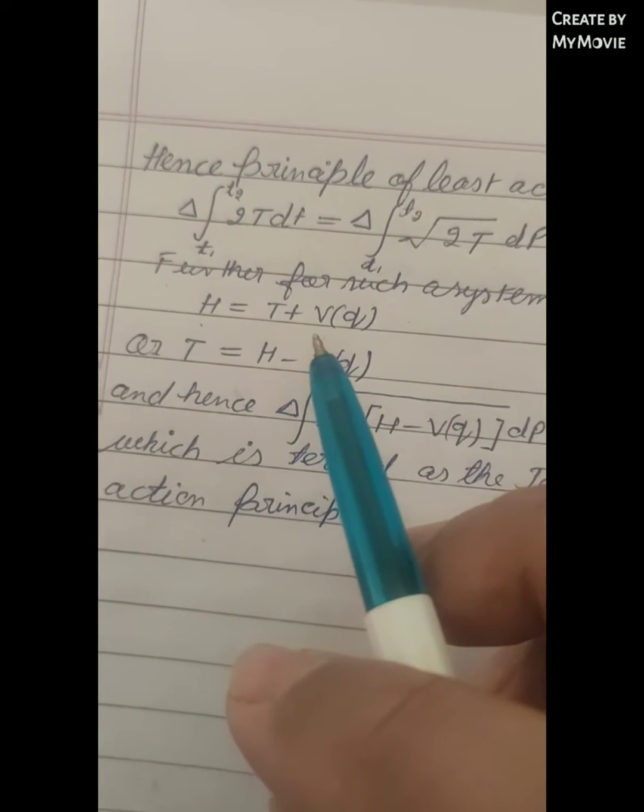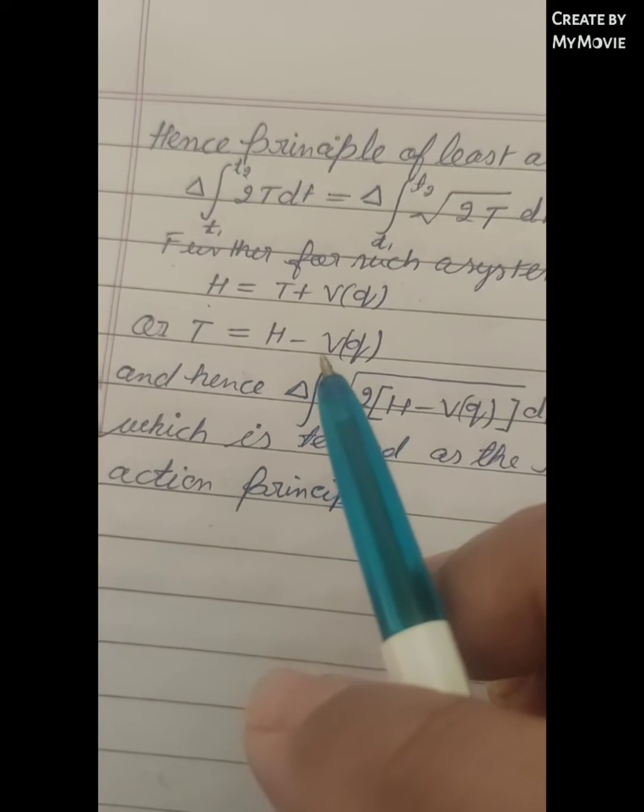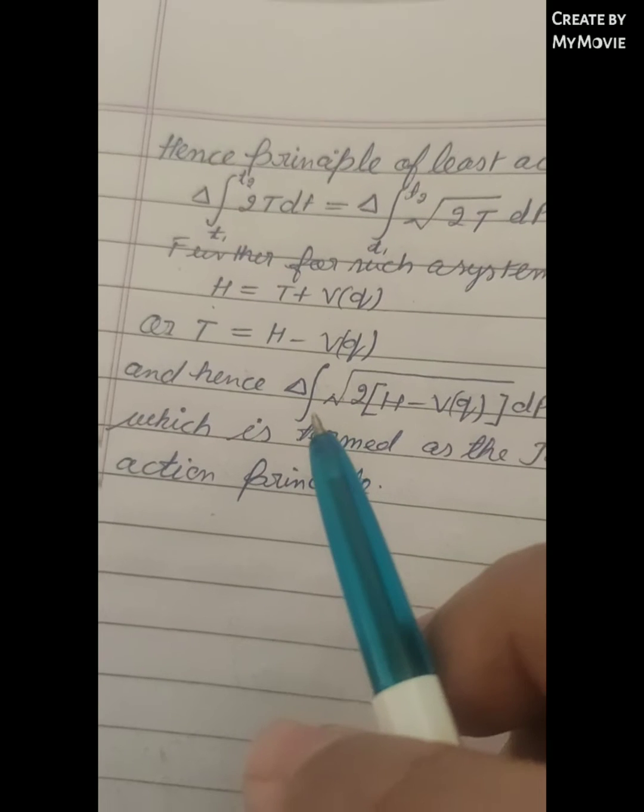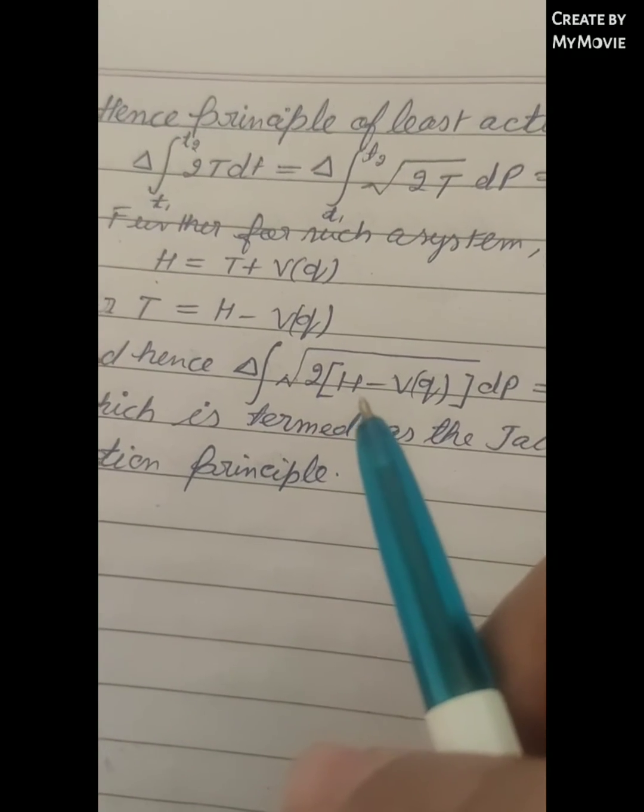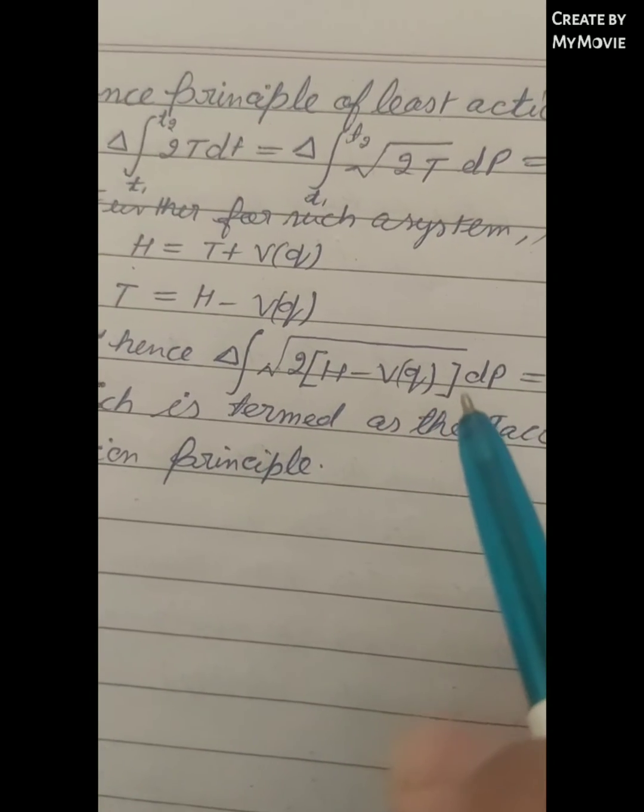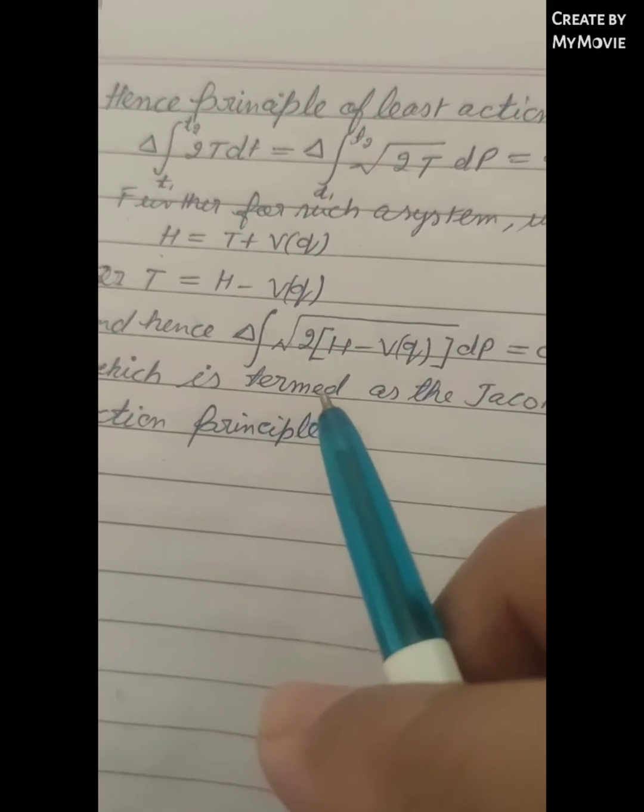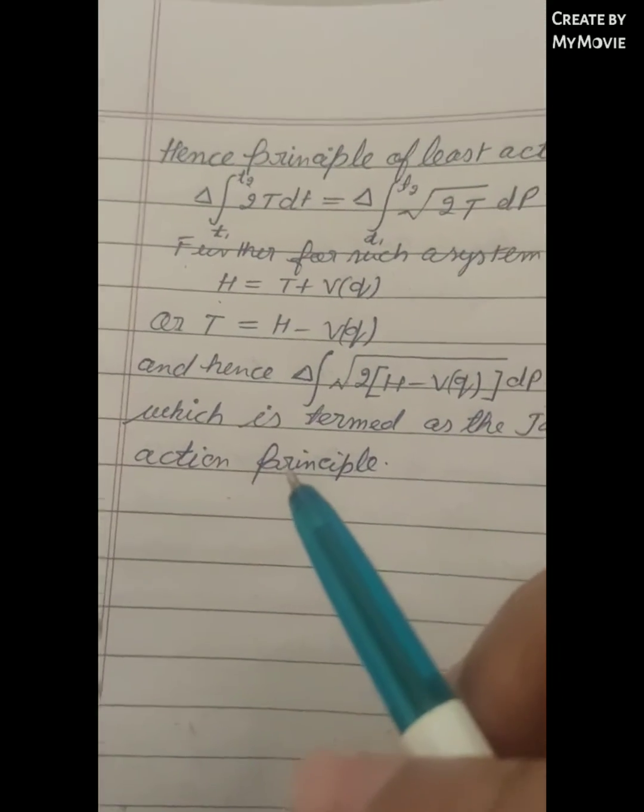H equals T plus V(q), or T equals H minus V(q). Hence, delta integral of square root of 2[H minus V(q)] d rho equals 0, which is termed as the Jacobi's form of least action principle.